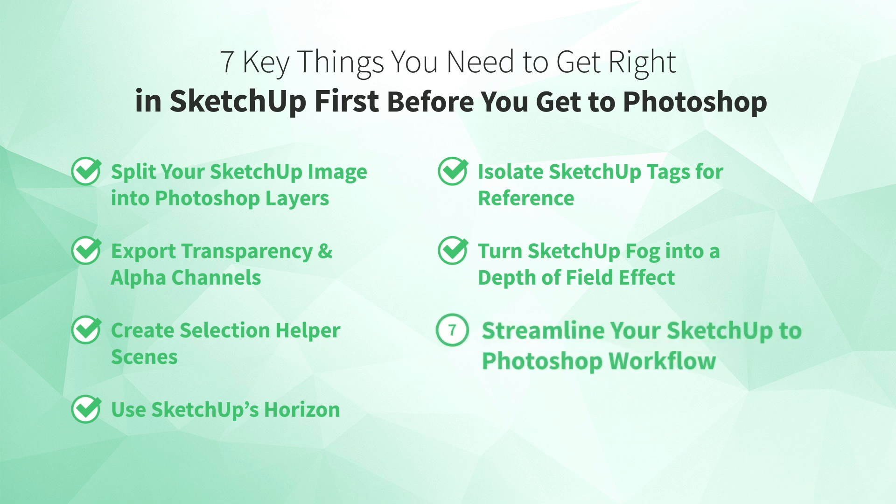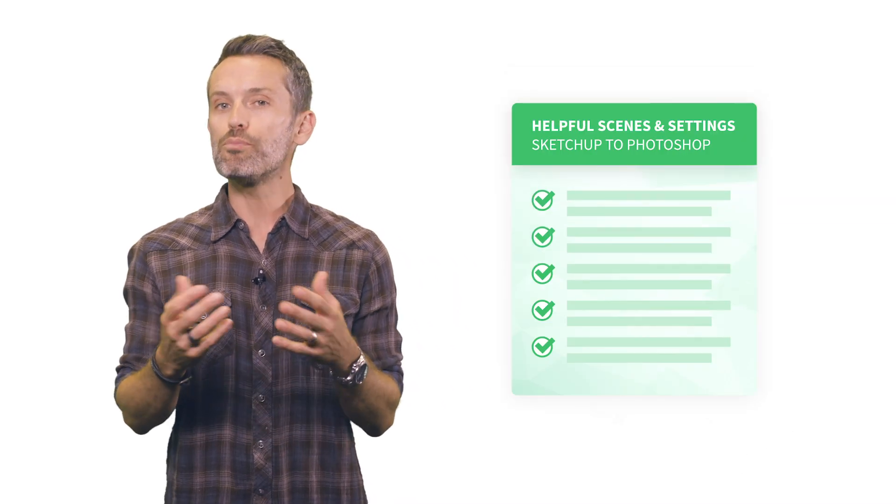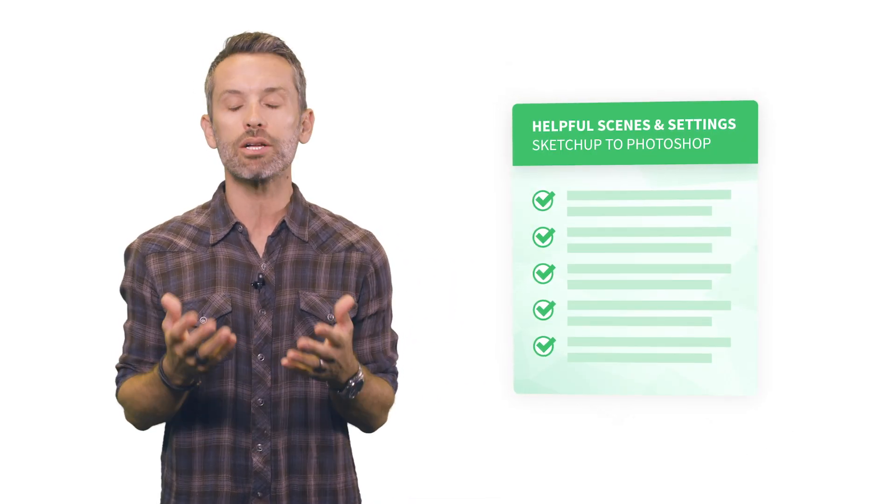Number seven: streamline your SketchUp to Photoshop workflow. If you're only rendering one or two SketchUp images in Photoshop, your best bet is to manually walk through the steps for the tips already mentioned and really understand how each setting in SketchUp gives you new levels of control in Photoshop. But once you've got the hang of it and plan to render more images over time, there's a lot you can do to speed up the process and guard against errors like getting settings wrong or forgetting to create a scene. First, until this whole process is second nature, it's helpful to have a cheat sheet reminding you of all the scenes, settings, and how to use them in Photoshop — I've put one together for you based on the tips in this video, included in the notes.